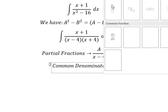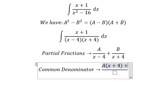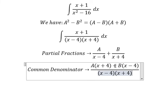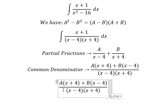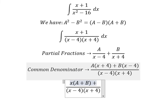So I will have A multiplied by (x + 4) and B multiplied by (x - 4). We need to arrange based on the term of x. For x, we have A + B. For the constant, we have 4A - 4B.